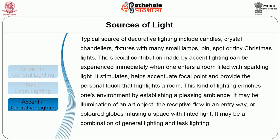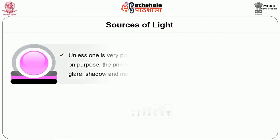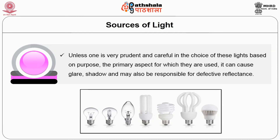The third type is accent or decorative lighting. Typical sources include candles, crystal chandeliers, fixtures with many small lamps, pin spots, or tiny Christmas lights. The special contribution of accent lighting can be experienced immediately when one enters a room filled with sparkling lights — it stimulates, helps accentuate focal points and provides the personal touch that highlights the room. This kind of lighting enriches one's environment by establishing a pleasing ambience. It may be illumination of an art object, coloured globes infusing a space with tinted light, or a combination of general and task lighting. Unless one is very prudent and careful in choosing these lights, they can cause glare, shadow and defective reflectance.